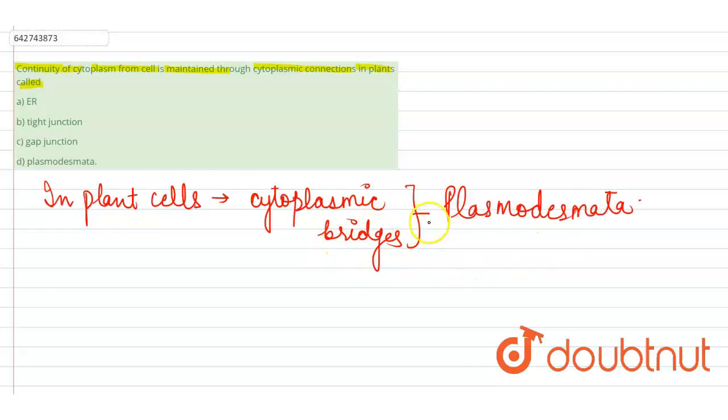How do these bridges or the plasmodesmata develop? These are the structures that develop in the minute pores in their cell wall.